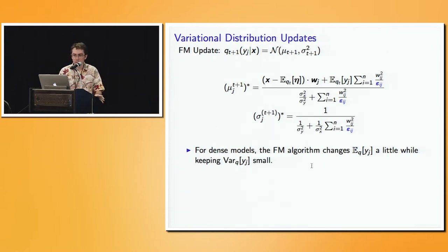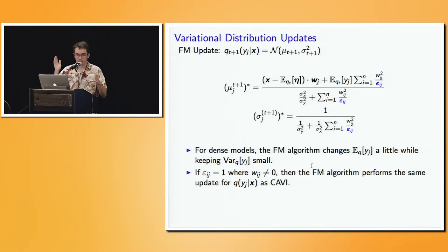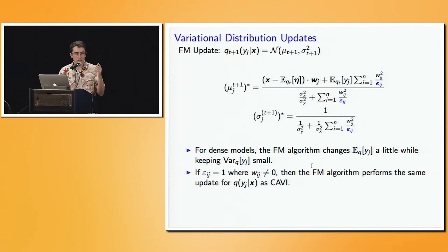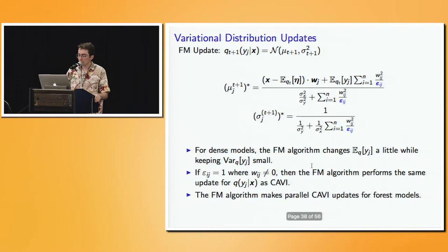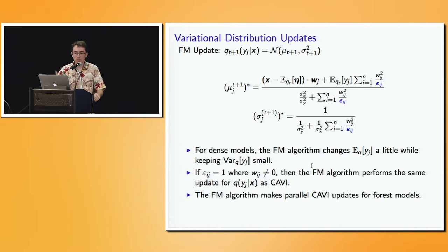Other nice properties: if epsilon_ij equals one, you're exactly doing a coordinate ascent update. You can also interpret epsilon_i as indicating which variable to update next. Also, epsilon_ij is one wherever the weights are non-zero — in particular for a forest model. So for an exact forest model, this algorithm exactly recreates the parallel forest algorithm described earlier.